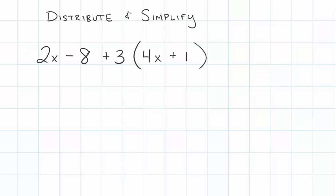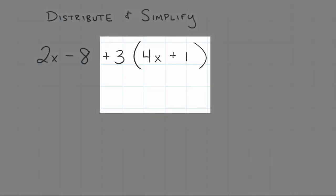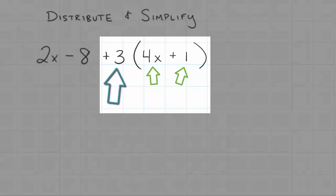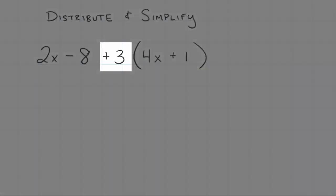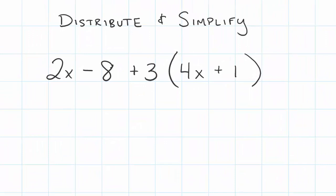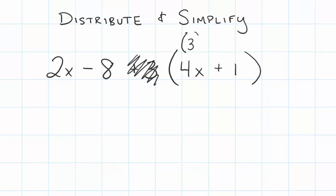When we take a good look at this we have to look at where distributive property is. Distributive property means we're gonna take a number and multiply it by each term inside a set of parentheses. The number outside our parentheses here is positive 3. We're gonna cross that out and above each term inside the parentheses I'm gonna put 3 above it. That tells me I'm gonna multiply 4x times 3 and positive 1 times 3.